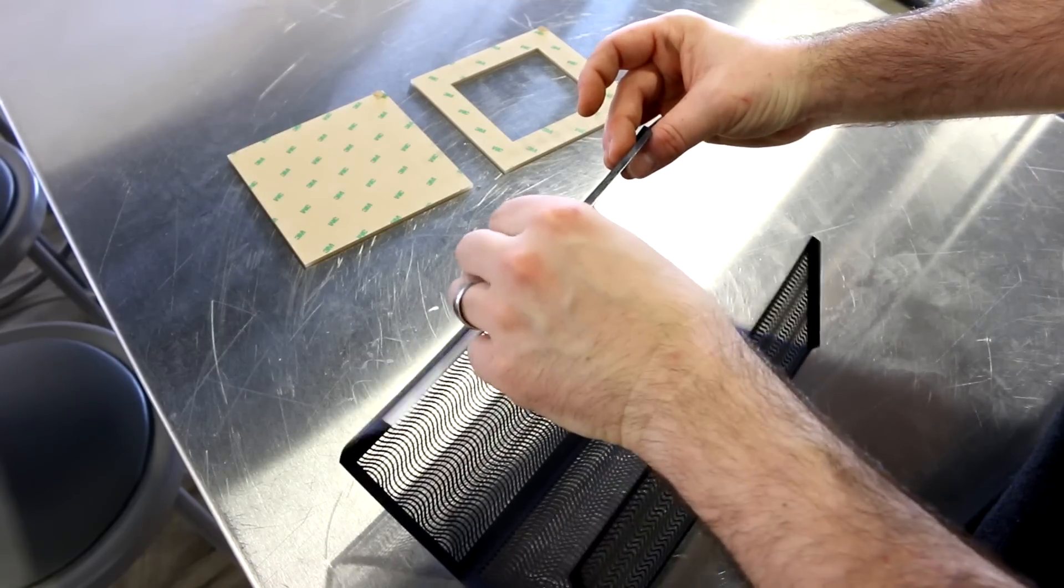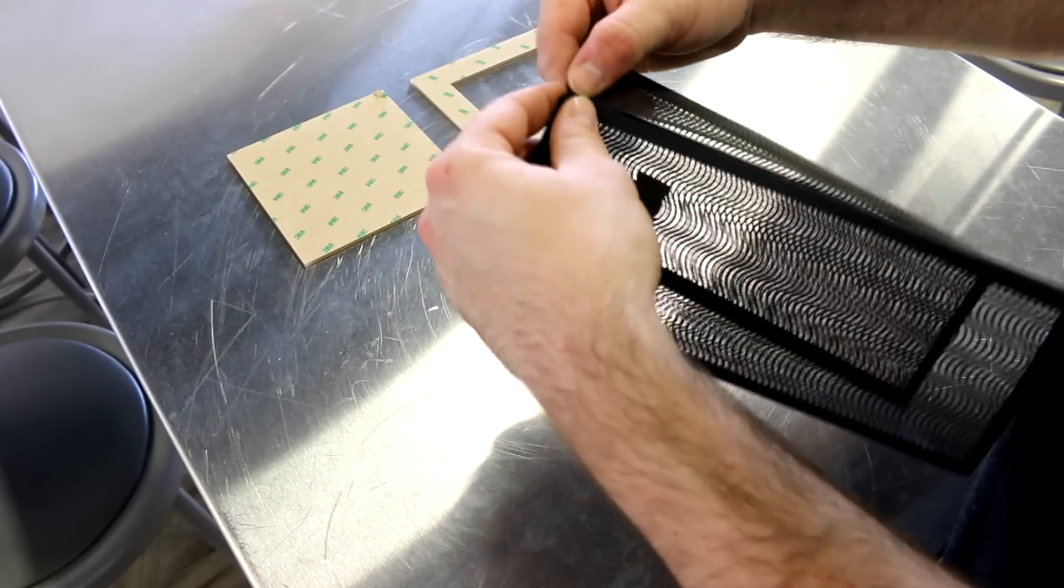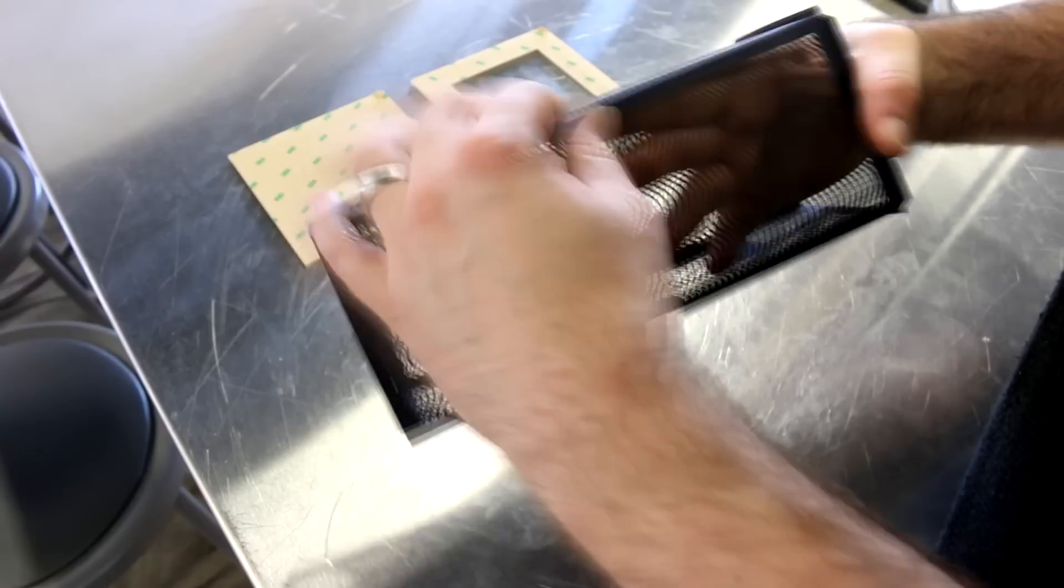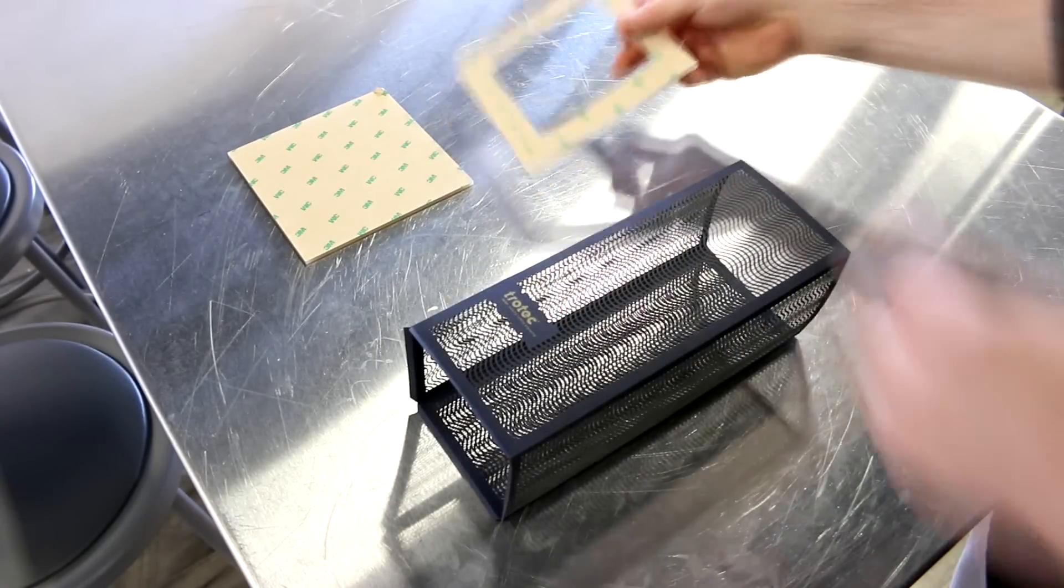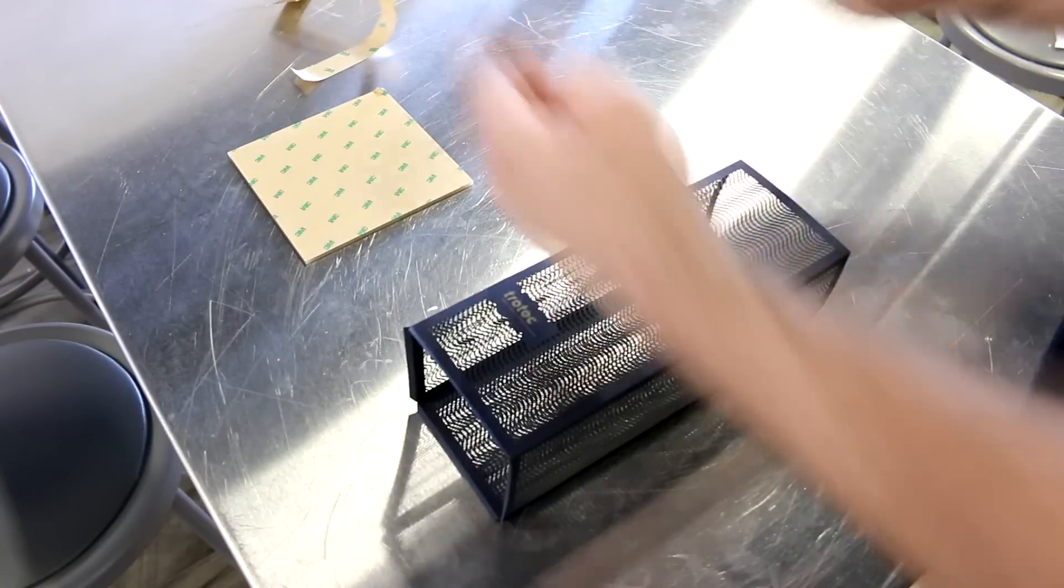Once our lantern was folded, we stuck it together with a strip of adhesive and then placed it onto our base. Our colored laser paper comes in 8 different colors. It's heavy duty which means it's thick and durable.